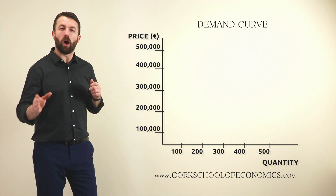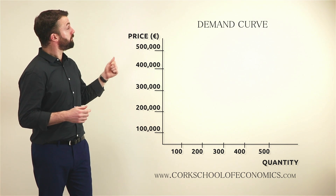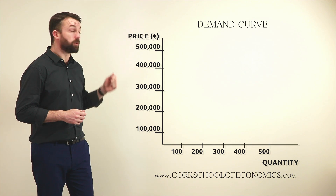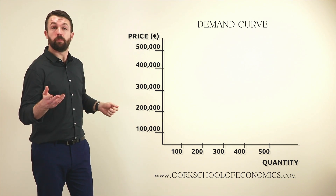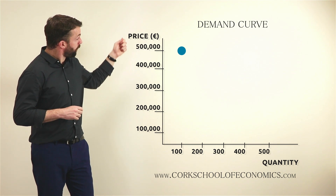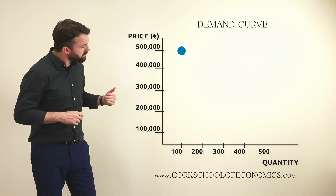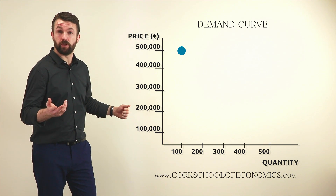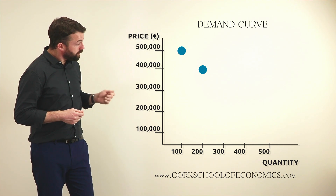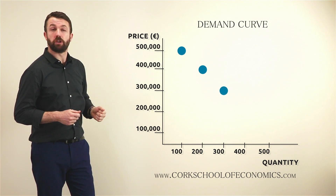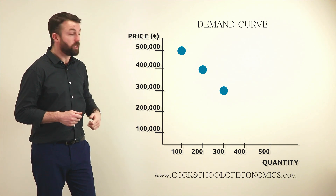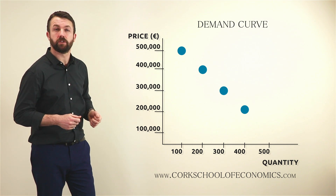Take a high price — take 500,000 euro. At that price the quantity demanded will be low, so at 500,000 euro there may just be 100 houses demanded. When the price comes down to 400,000 euro, the quantity demanded will rise to 200 units. As the price comes down to 300,000 euro, you'll see a quantity demanded increase to 300 units. As the price comes down again to 200,000 euro, you'll see the quantity demanded rise again to 400 units.